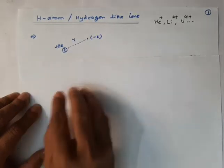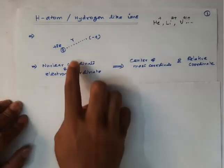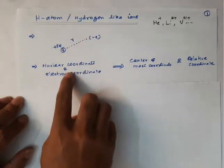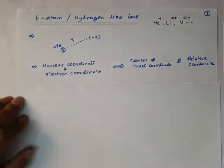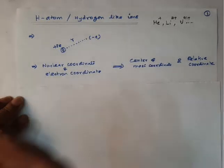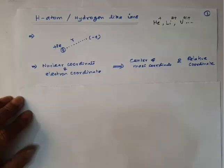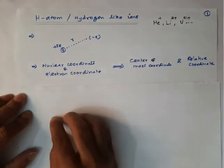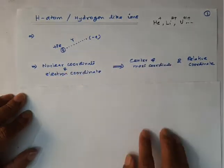In the last class we discussed that the entire hydrogen atom will move, so you have nuclear coordinates and electron coordinates. If you take the nuclear and electron coordinates as such, the wave function depends on six coordinates. Whenever the wave function depends on six or more coordinates, it is not possible to solve the Schrödinger equation. So we have to transform the coordinates — we change from nuclear and electron coordinates to center-of-mass coordinates and relative coordinates.